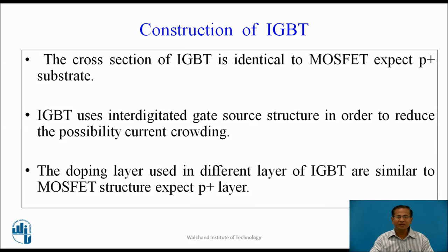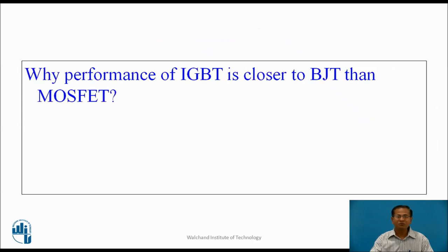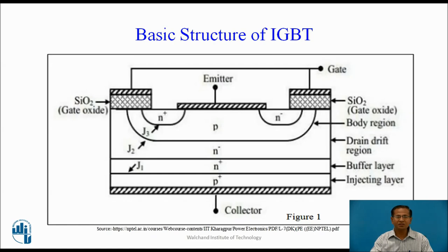The cross section of the IGBT is identical to the MOSFET except for the P-plus region. IGBT uses an interdigited gate-source structure to reduce the possibility of current crowding. The doping layers are similar to the MOSFET structure except the P-plus layer. The performance of IGBT is closer to BJT than MOSFET because the P-plus bottom layer injects charge carriers, causing current to flow due to both holes and electrons.